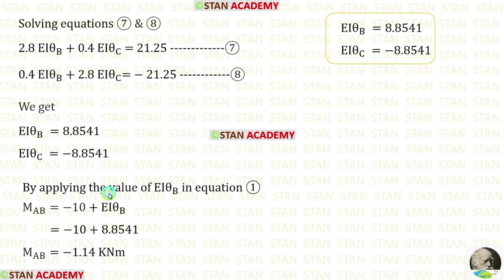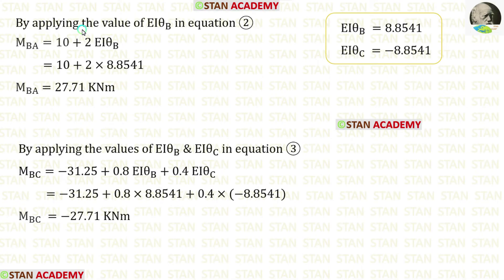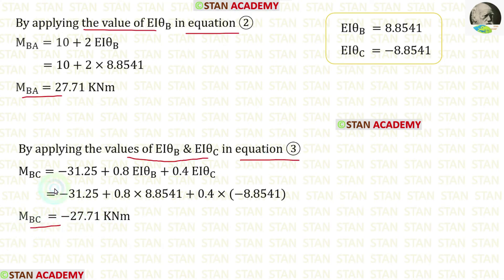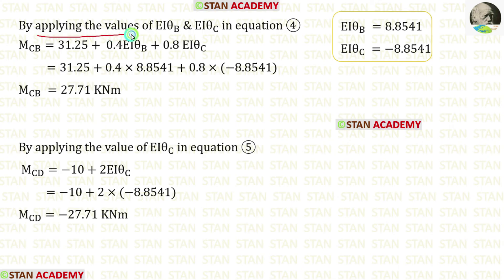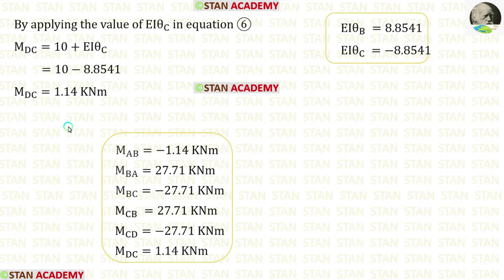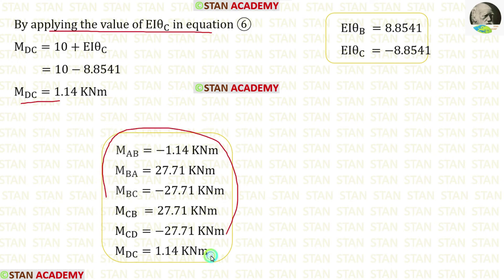Applying the value of EθB in equation 1 gives M_AB. Applying EθB in equation 2 gives M_BA. Applying EθB and EθC in equation 3 gives M_BC. Applying EθB and EθC in equation 4 gives M_CB. Applying EθC in equation 5 gives M_CD. Applying EθC in equation 6 gives M_DC. So in this analysis we have found all of the moments.